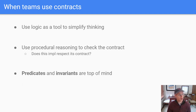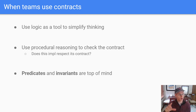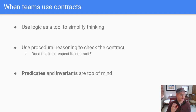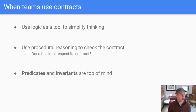What happens to teams when they use contracts? The first thing I've noticed is that they end up using logic as a tool for simplifying their thinking, not just procedural thinking. They use procedural reasoning to make sure that the contract is being satisfied — they'll read through the steps of an implementation and confirm that the code will actually satisfy the contract they're talking about. And two particular kinds of things are top of mind for these teams: predicates and invariants. When a team is using contracts, they talk in terms of what must always be true or what must never be true in certain modules or methods, and they start building up a vocabulary of predicates — for example, is_premium_customer — because that's the language of logic they see in the contracts.